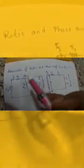Students, today we will study the determination of ratio and phase angle error of a current transformer. This is the equivalent circuit of any transformer. We have VP, which is the supply voltage on the primary side; IP is the primary current; RP and XP are the resistance and reactance on the primary side; I0 is the no-load component; RW is the working component; and XM is the magnetizing component.